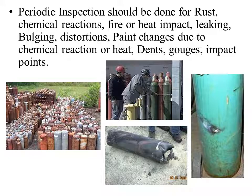Periodic inspection should be done regularly to check for rust or chemical reactions, fire or heat impact, leaking, bulging, distortion, and so on. As shown in the sketch, certain figures show dents, bulging, or corrosion — cylinders in such condition should not be used. Whenever cylinders are found with dents, gouges, or impact points, they should first be checked to determine whether they can be used safely before proceeding with use.